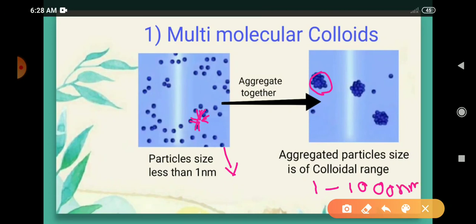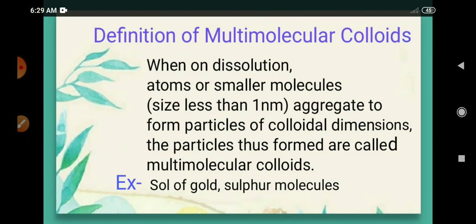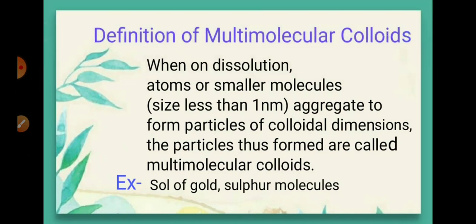That means the size is now between one to thousand nanometers, and it will act as a colloid. Previously the particle sizes are less than one nanometer, but these aggregate to form colloidal particles. Definition of multi-molecular colloids: when on dissolution, atoms or smaller molecules with size less than one nanometer aggregate to form particles of colloidal dimensions, the particles thus formed are called multi-molecular colloids. Examples: sol of gold, sulfur molecules, etc.